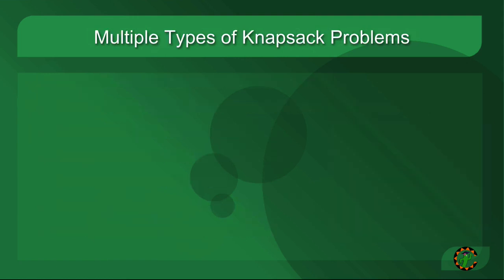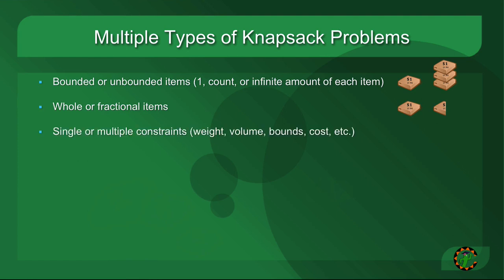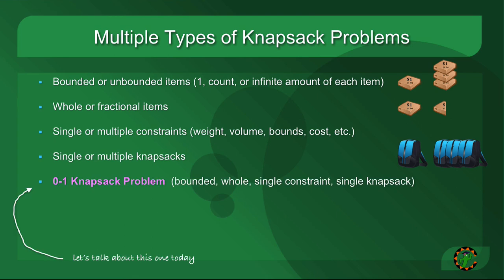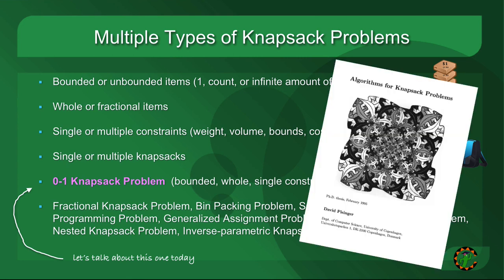There are actually multiple types of knapsack problems. We're talking about the 0/1 knapsack problem today, but you have versions that are bounded or unbounded numbers of items — perhaps you can have an infinite number of a particular item — fractional items, like powdered gold or liquid platinum, multiple constraints, multiple knapsacks, and so on. There are also many problems out there that are very similar to or can be related to the knapsack problem, so it's just a very common problem.